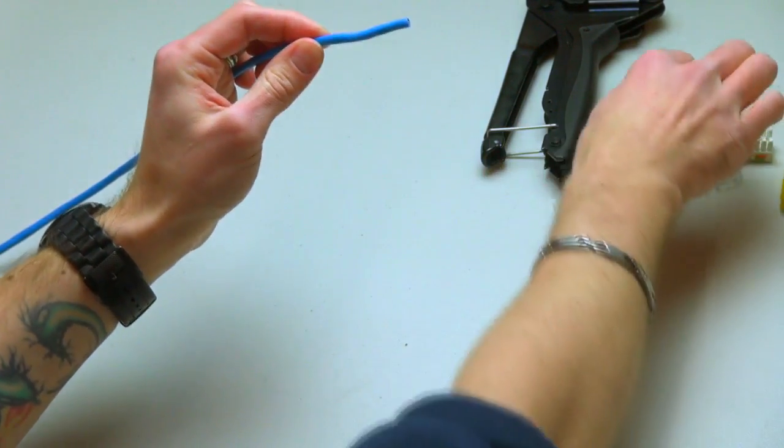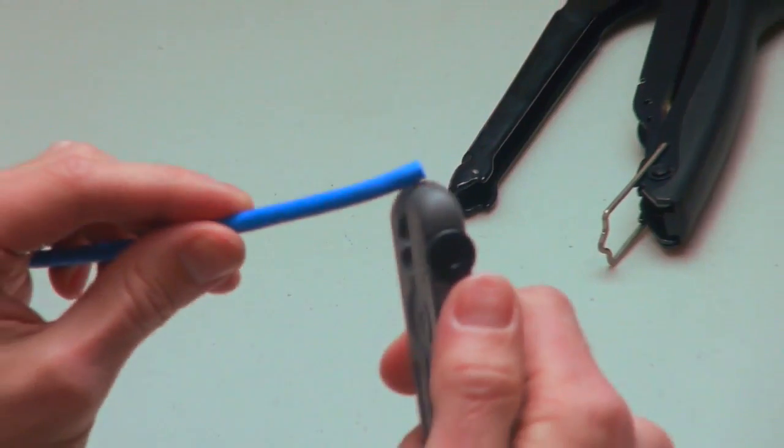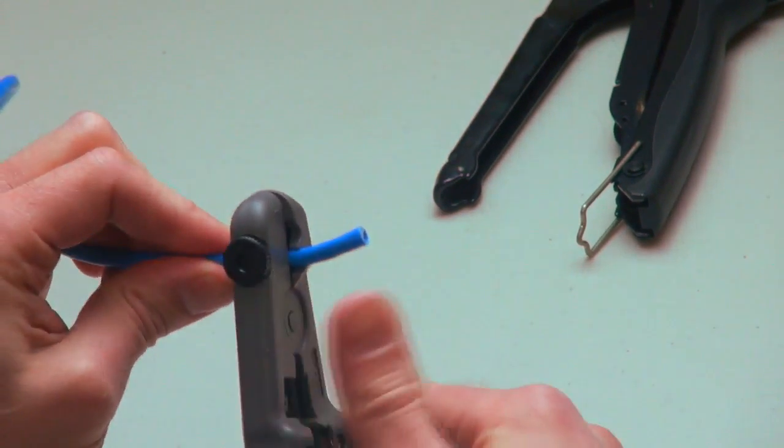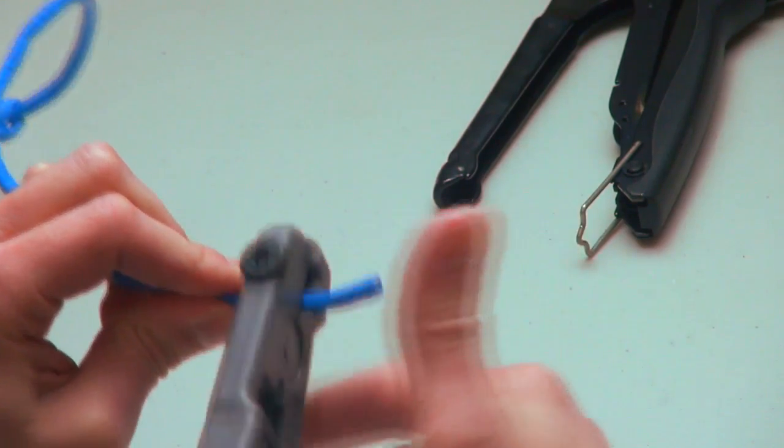Step 1: Cut the specified length of Cat6 UTP 4-pair cable and insert into the cable prep tool. Rotate in one direction one to two turns.